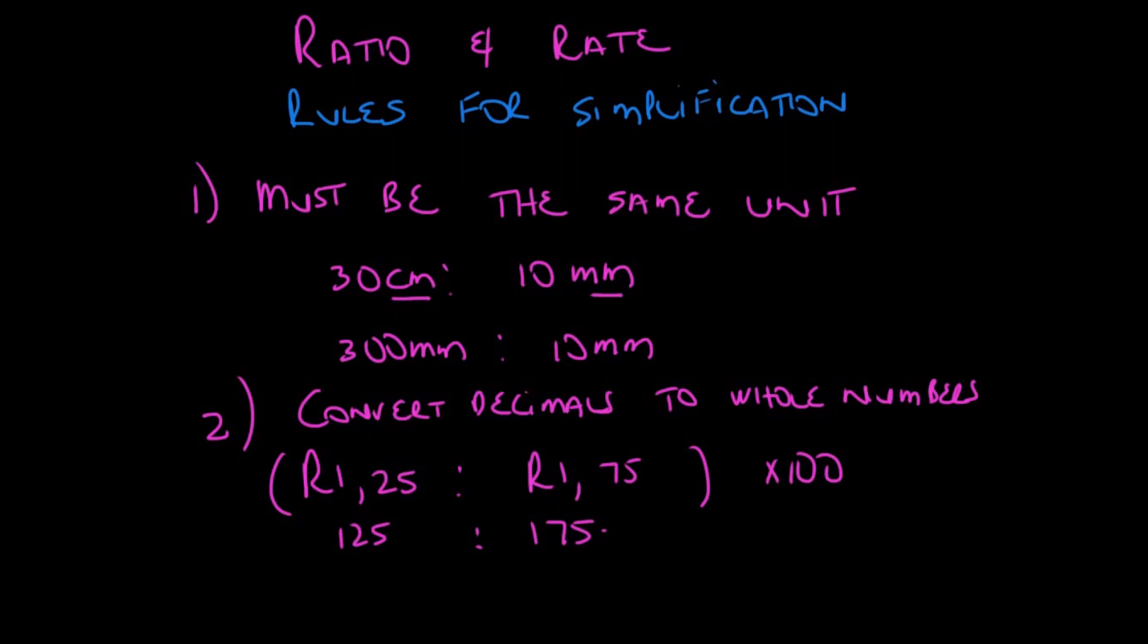And in this case, what do we need to do? We need to multiply 30 cm by 10. If we multiply by 10, we'll get 300 mm as to 10 mm. I'm not doing any of the simplification as yet. All I'm doing is working through the rules. I'll get to the simplification later on.